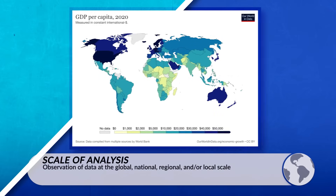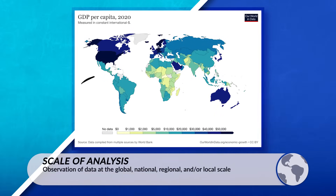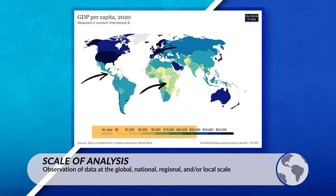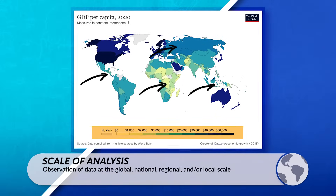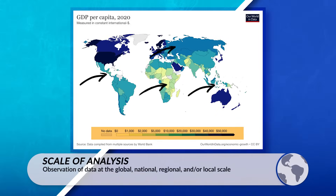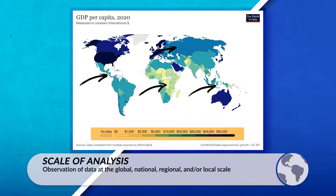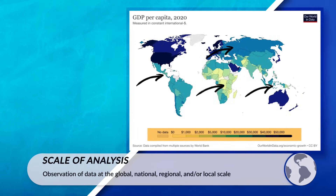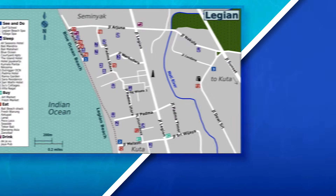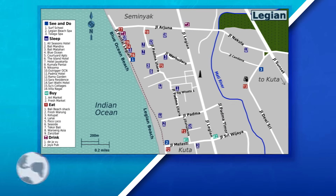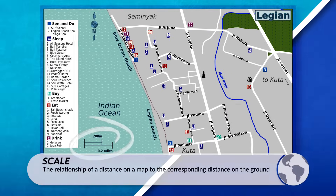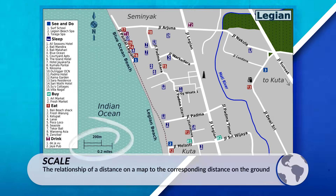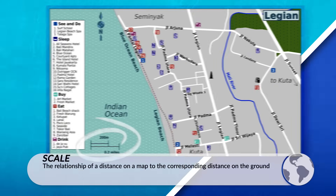When talking about scales of analysis, we are looking at how information is being organized. Each scale provides us different insight into what we are looking at. Remember, when we're talking about scale, we're talking about the distance on a map in relationship to the Earth's surface.